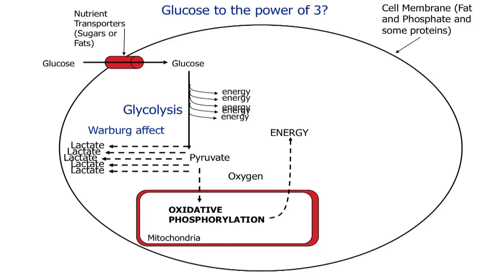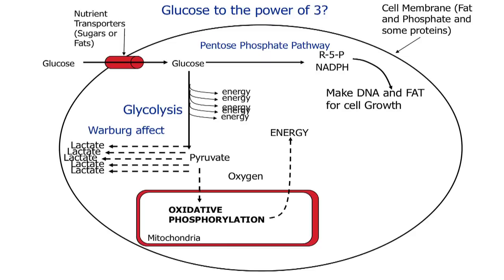This would only be a problem if energy were the only thing a cell needs to grow. But cells need to convert that energy into biomass. For that, there is an alternative pathway called the pentose phosphate pathway, where glucose goes through an alternative route to glycolysis. The end products are ribose 5-phosphate and NADPH, which are used to make DNA and fat, among other things. A continually replicating cancerous cell needs lots of DNA and lots of fat to make new cell membranes. Many people have shown that, independent of glycolysis, glucose is a great fuel source for the pentose phosphate pathway to allow cancer cells to accumulate the biomass needed to grow.